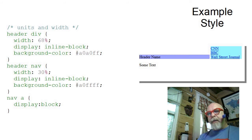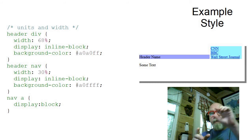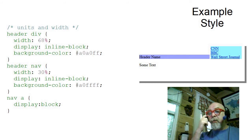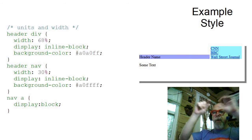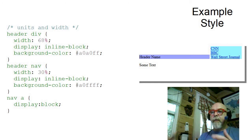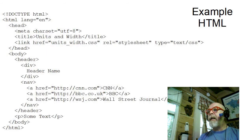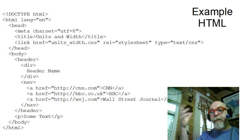The other thing the stylesheet does is change the anchor tags within the nav: `nav a` finds all anchors in the nav and changes them from inline to block, so they stack vertically. Without the style, you'd see the header div followed by the header nav with its links running across. The stylesheet makes it look much better. Looking at the HTML behind it, you can see the header with a div and a nav, then just a paragraph in the body to keep it simple. The CSS file is linked at the top using a link element, which is why it displays the way it does.